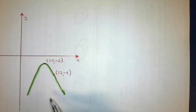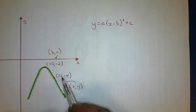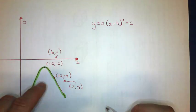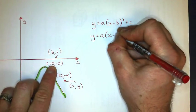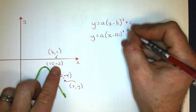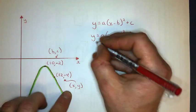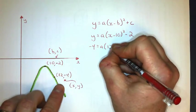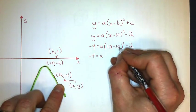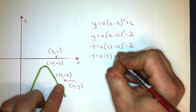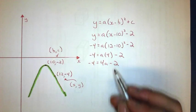Let's look at one more example. No x-intercepts are given — just a turning point and a point on the curve. I write my general form, knowing the vertex or turning point is (10, negative 2), and the other point on the curve is (12, negative 4). I substitute the turning point in first: y equals a times x minus 10, squared, minus 2. Then substituting x equals 12 and y equals negative 4: simplifying inside the brackets, 12 minus 10 is 2, and 2 squared is 4, so I get negative 4 equals 4a minus 2.